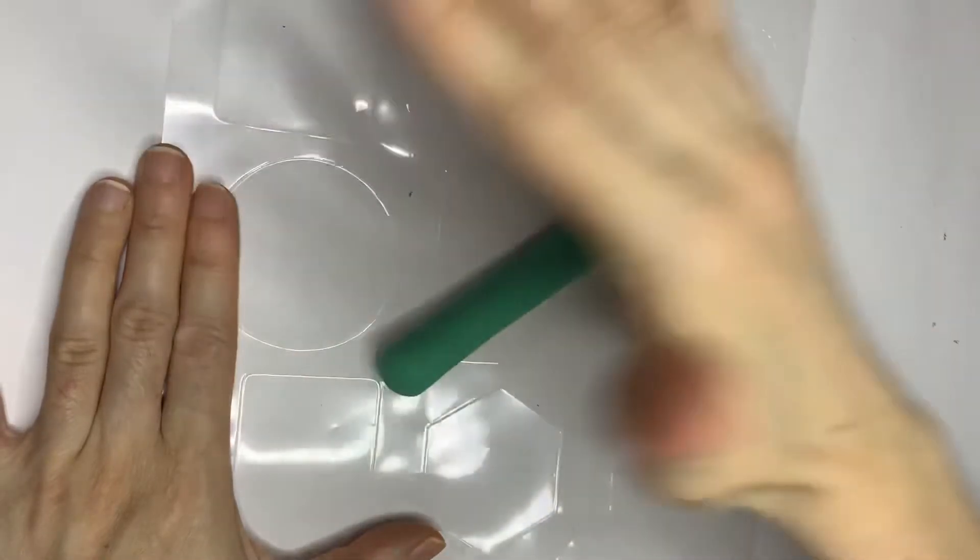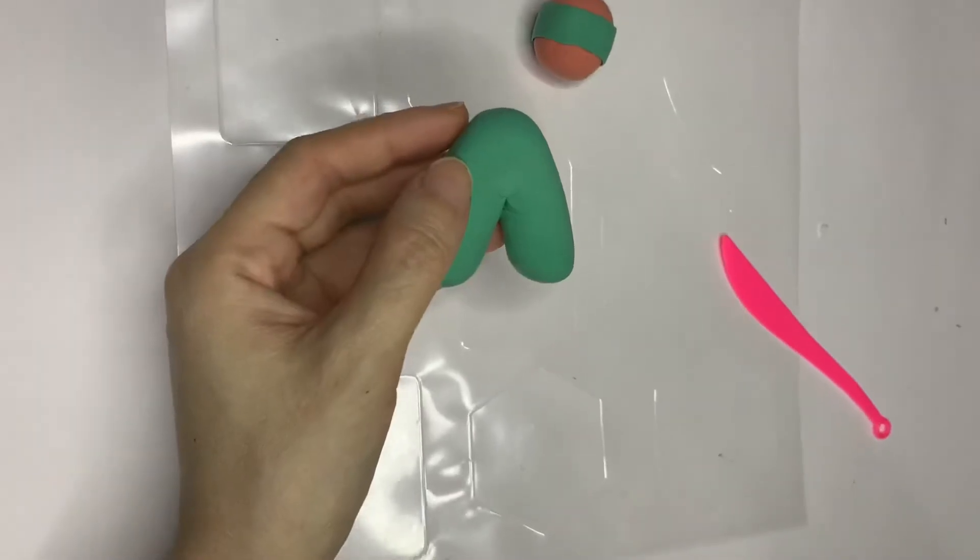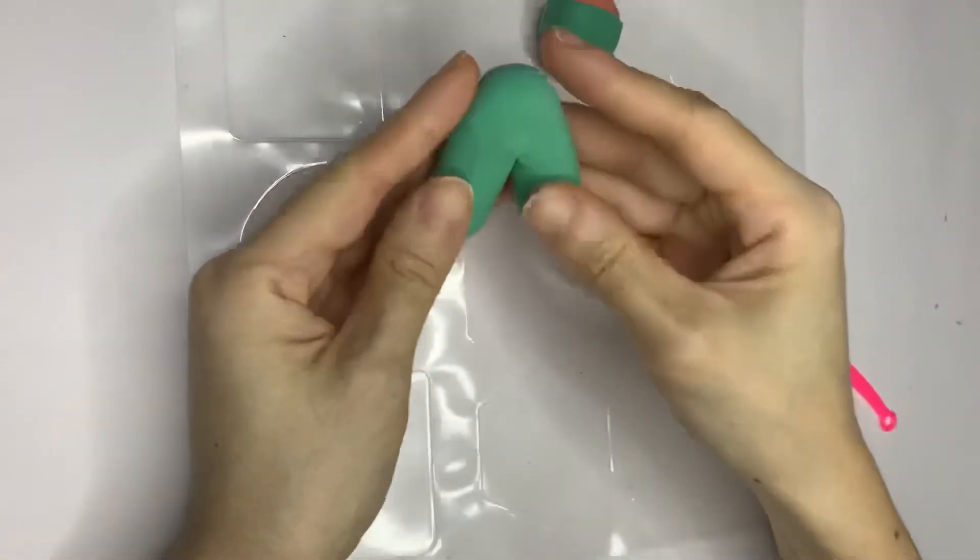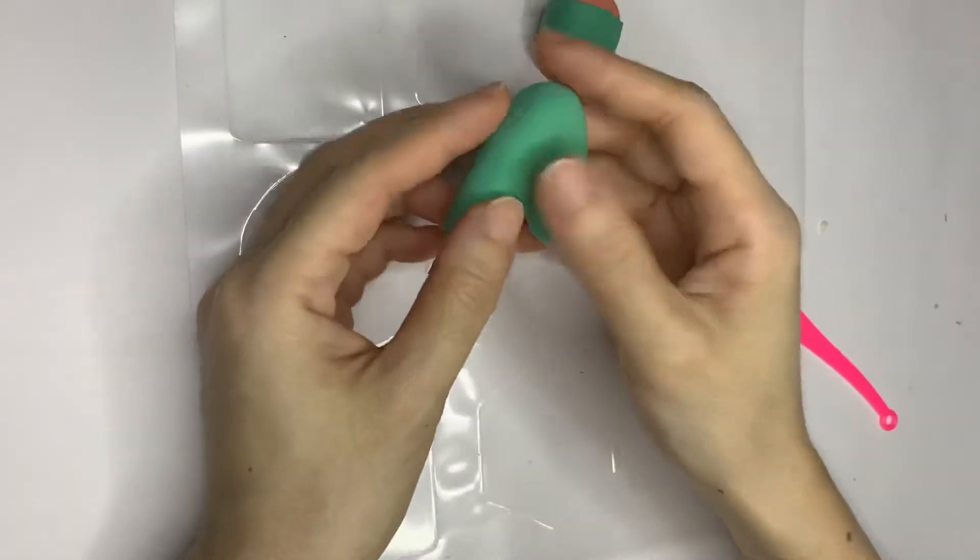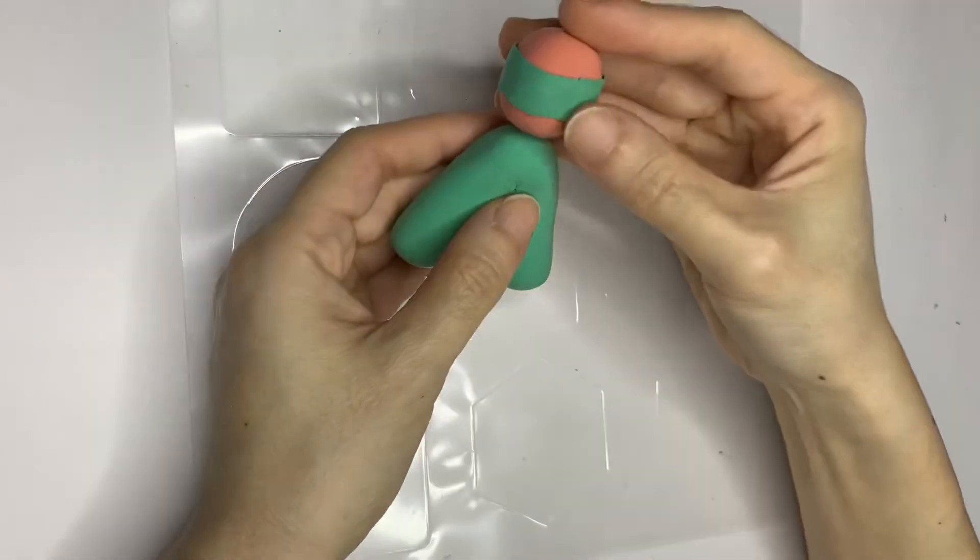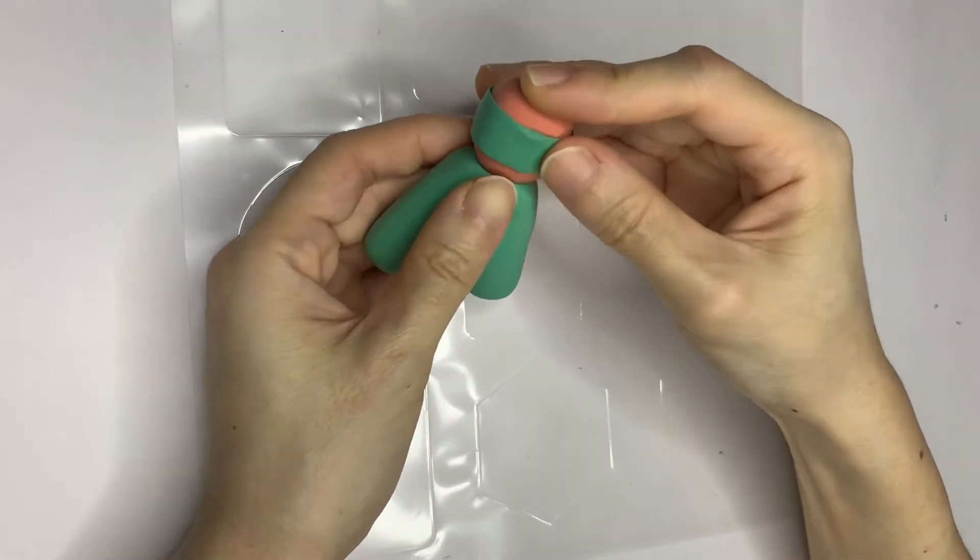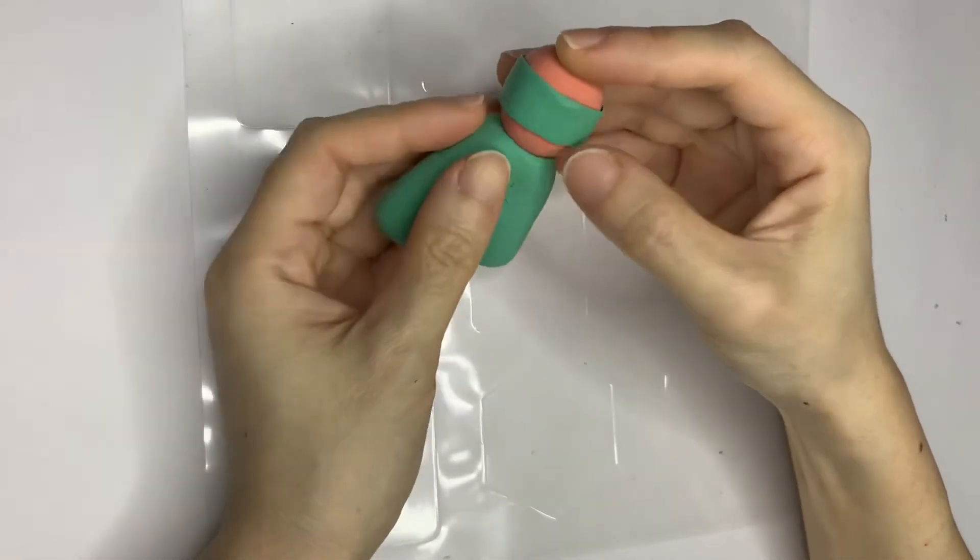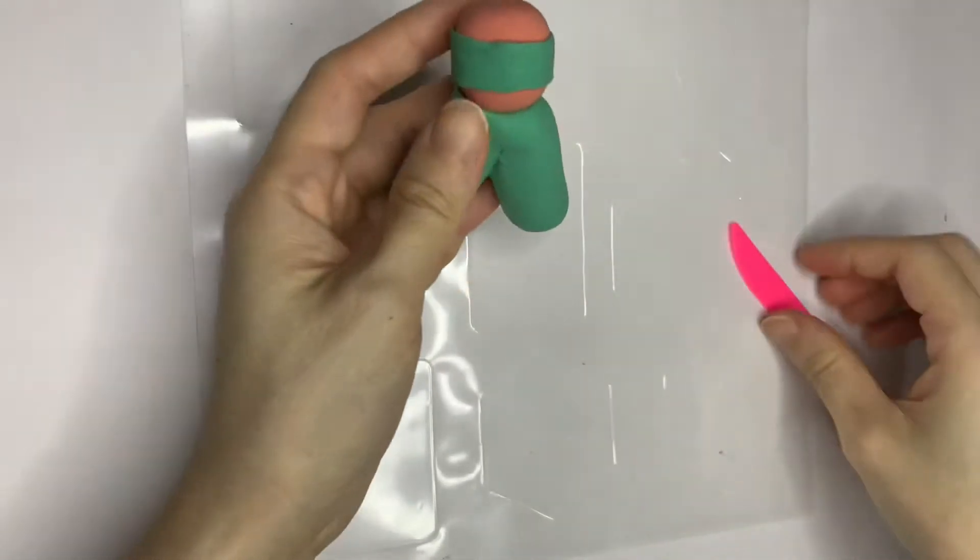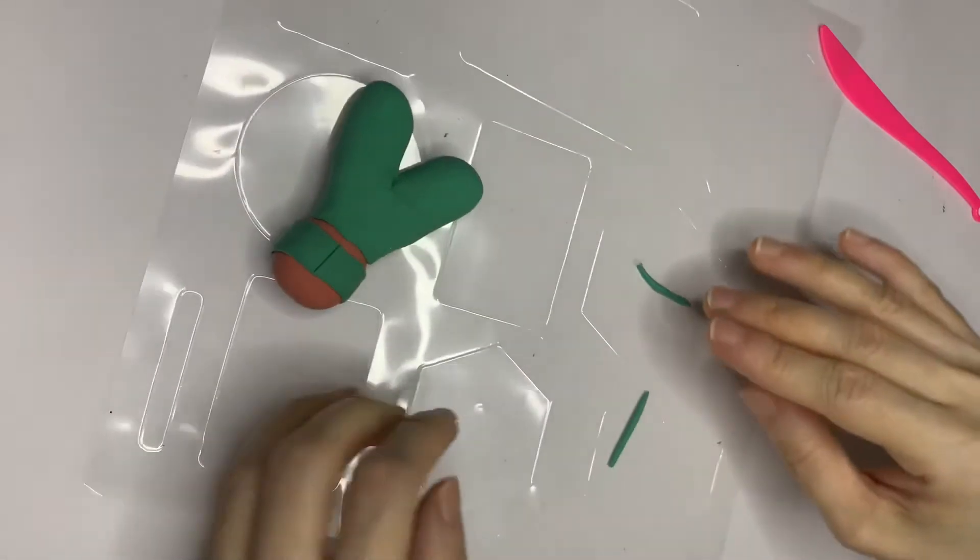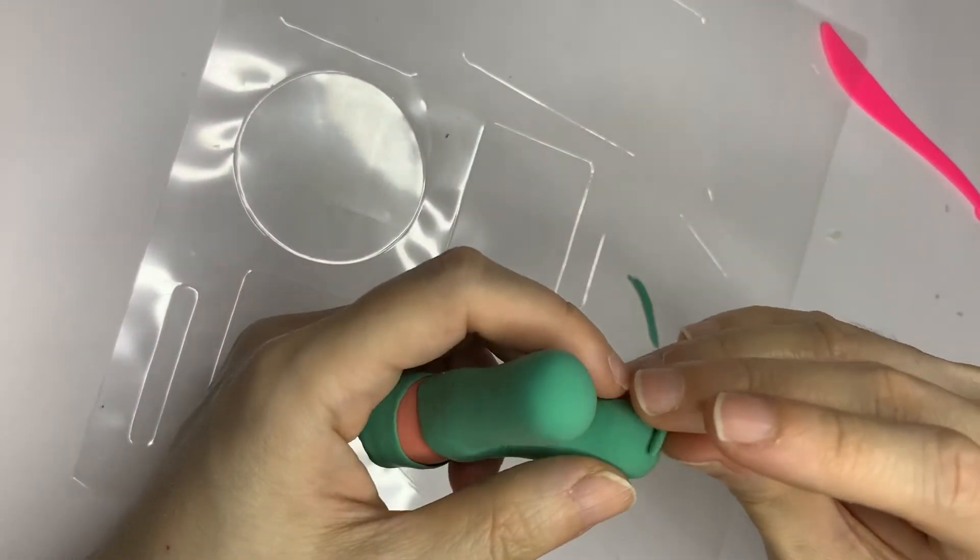Make a thick cylinder stripe to be the pants. Bend this thick cylinder in the middle to form a V shape. Attach it to the body. Make two small round circles to attach at the bottom of the pants.